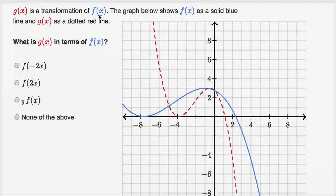g(x) is a transformation of f(x). The graph shows y = f(x) as a solid blue line and y = g(x) as a dashed red line. What is g(x) in terms of f(x)?